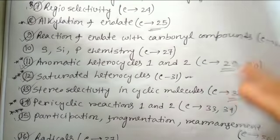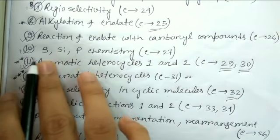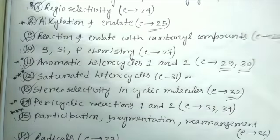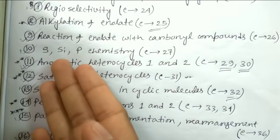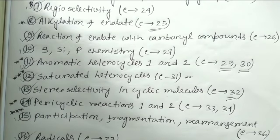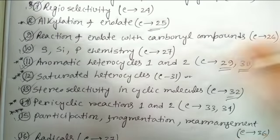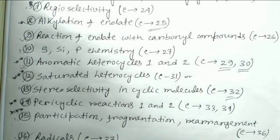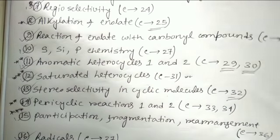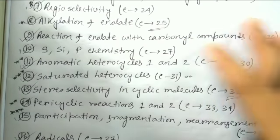I skipped one chapter - the chemistry of sulfur, silicon, and phosphorus (chapter 27 on main group element heteroatoms). There are many important reactions here: involving phosphorus - the Wittig reaction; involving silicon - the Peterson reaction; involving sulfur - the Julia olefination. Many important reactions related to heteroatoms are given and you must read this chapter.